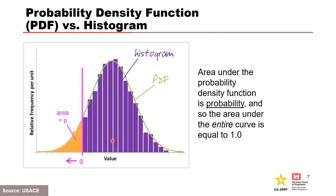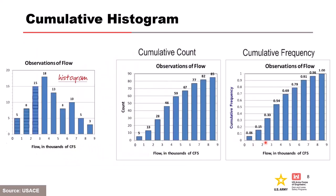The area under the probability density function is probability, which means the area under the entire curve is equal to 1. Histograms can also be accumulated for continuous random variables and are an estimate of the cumulative distribution function, or CDF.